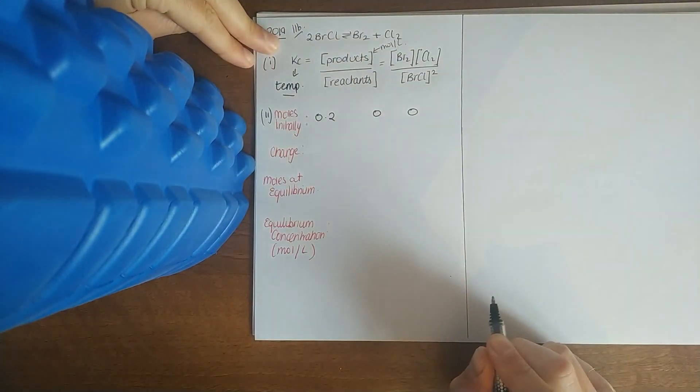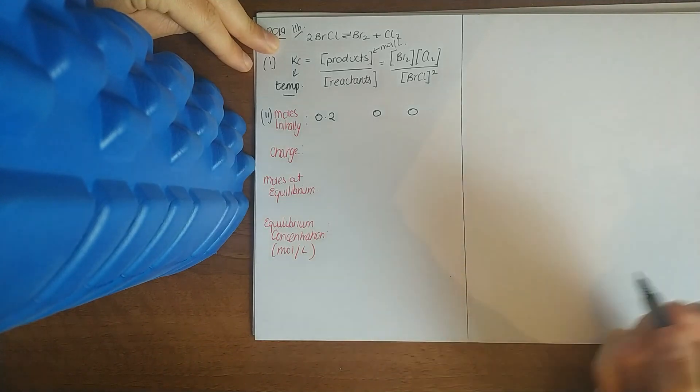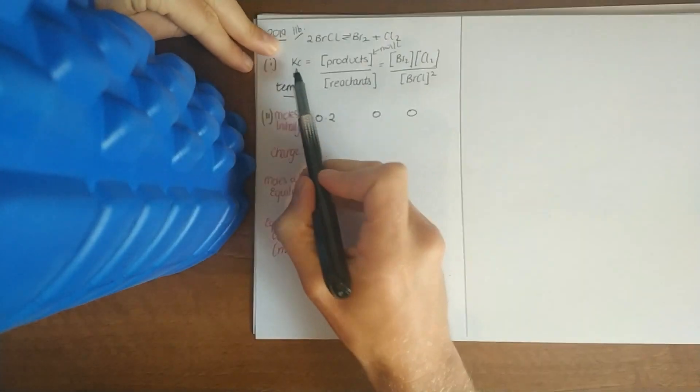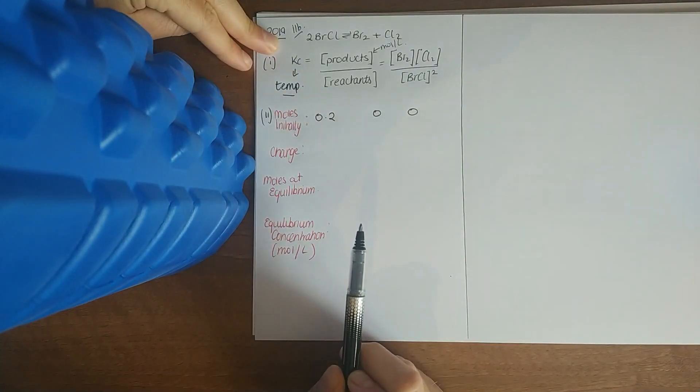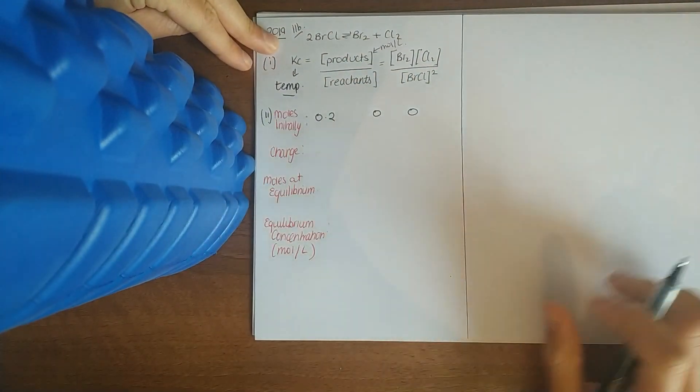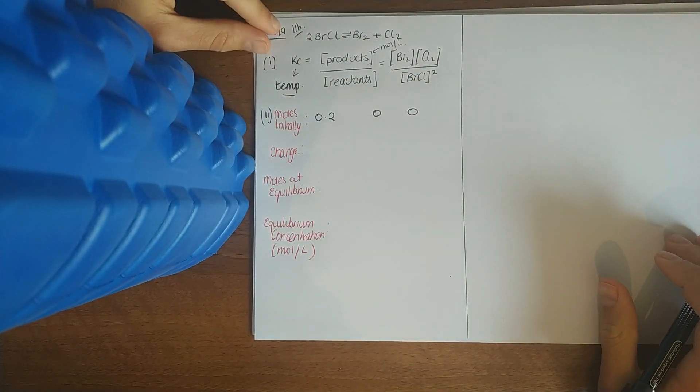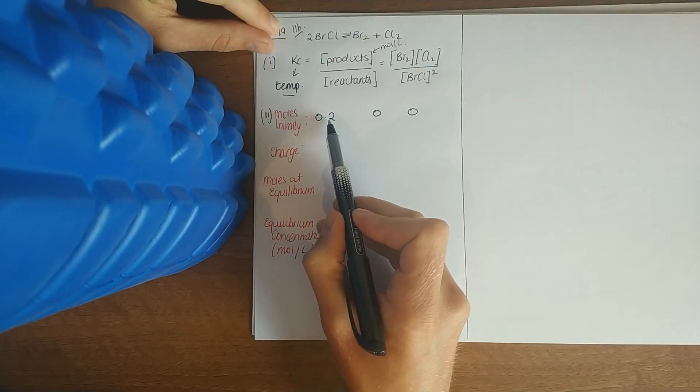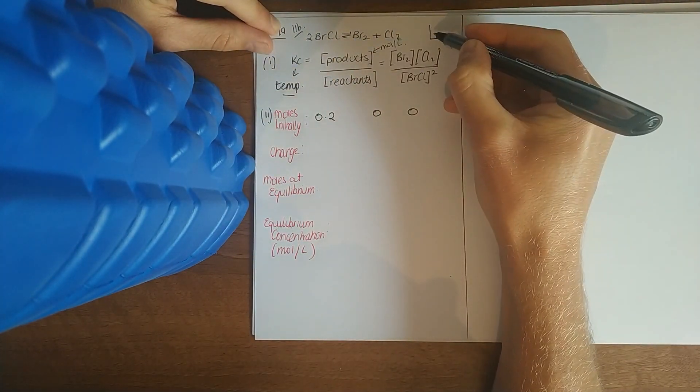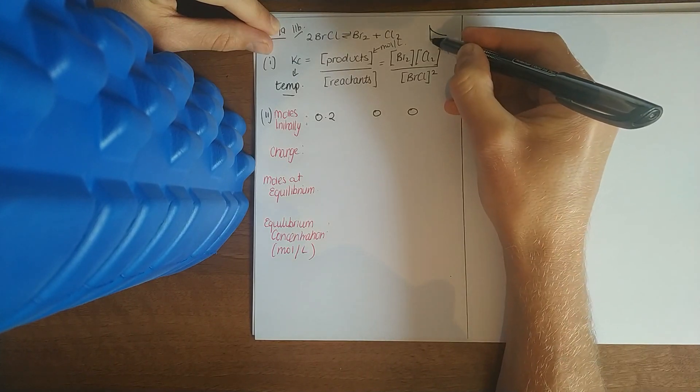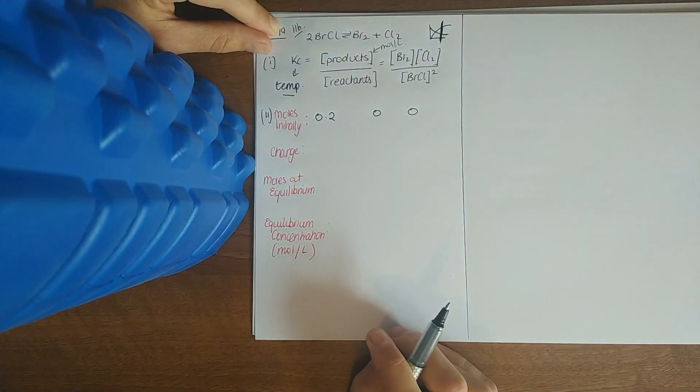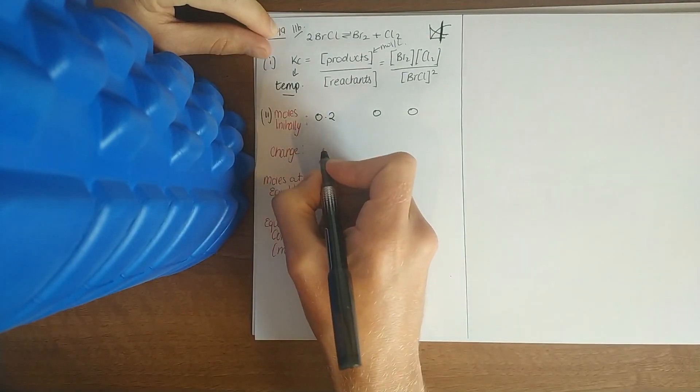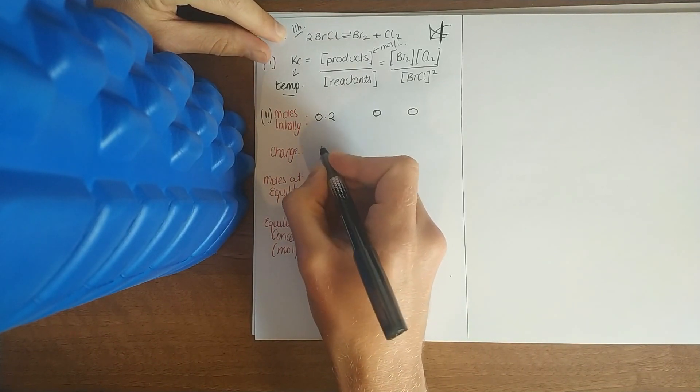Take the value of KC to be 0.22. There's two types of calculations: one where they give you the value of KC which is the more difficult type, and one where you're working out the value. This is a difficult enough calculation, very easy to make mistakes. What's going to happen to my concentration of reactants? Obviously they're going to go down because I'm making product, and at a certain stage I'll reach equilibrium.